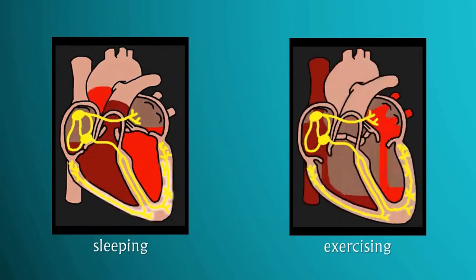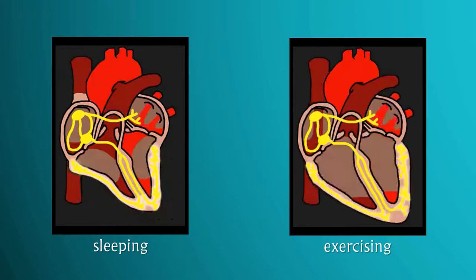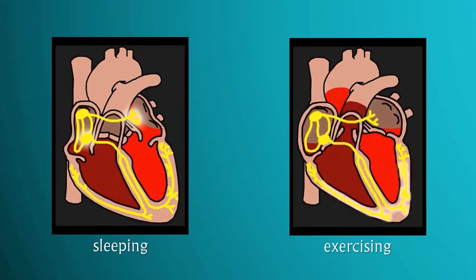The cardiac conduction system is capable of increasing and decreasing the number of electrical impulses depending on the amount of oxygen the body needs.